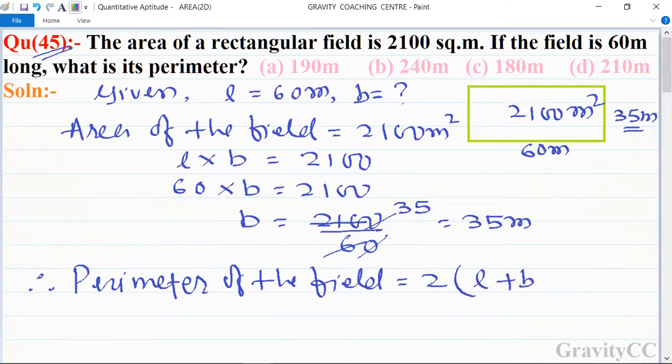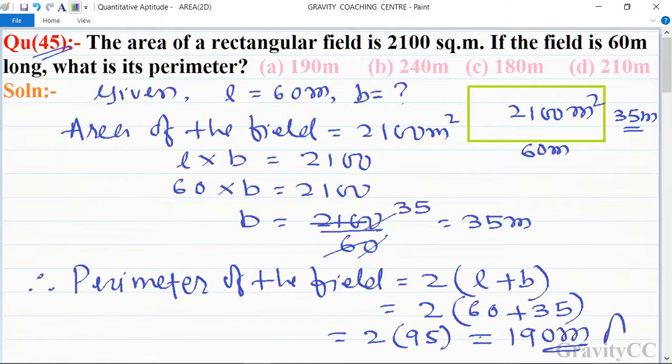...times L plus B, so it equals 2 times (60 plus 35), which equals 2 times 95, equals 190 meters. This is the required answer, so option A is the correct answer.